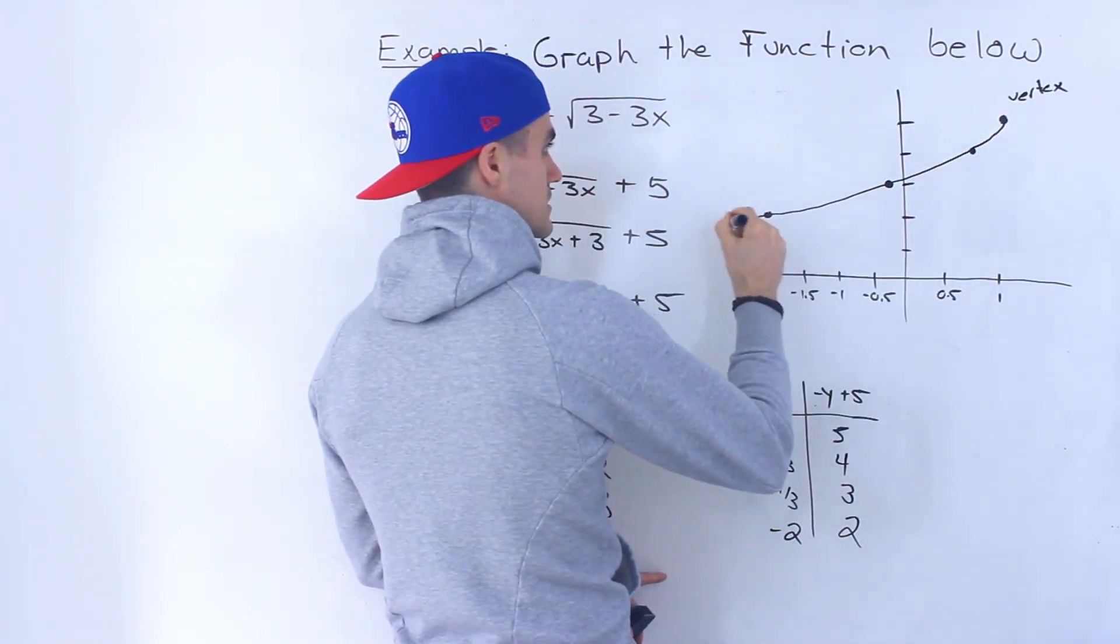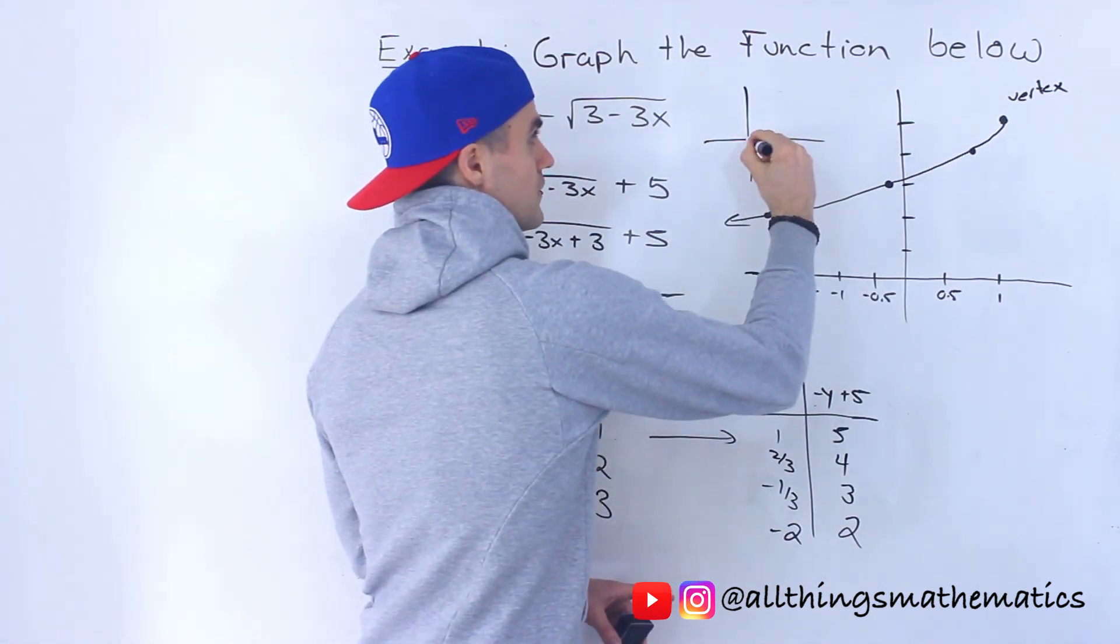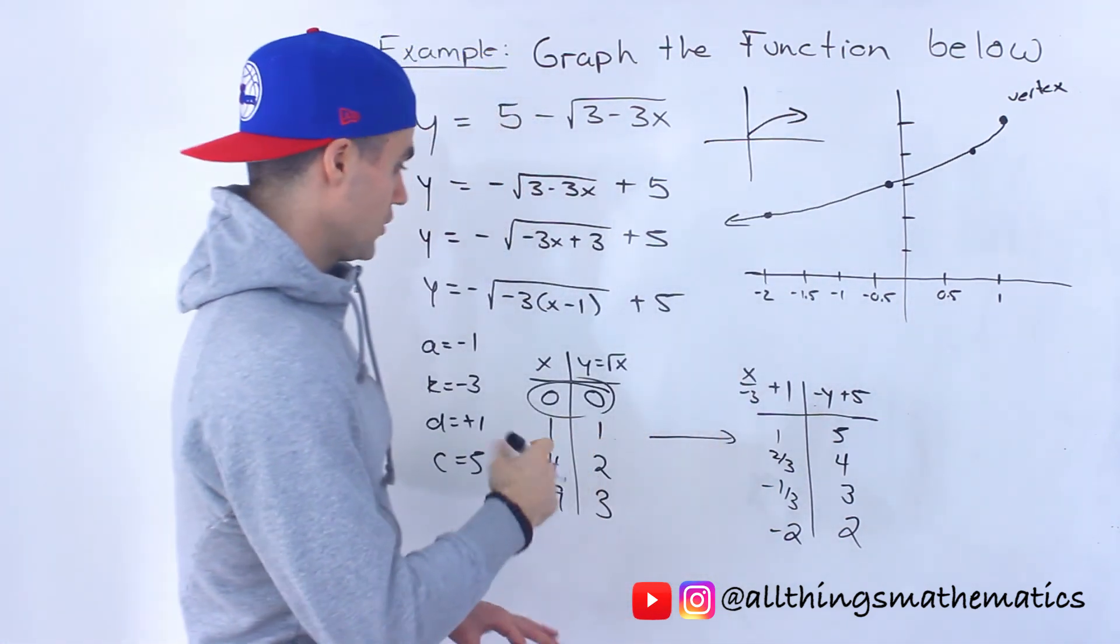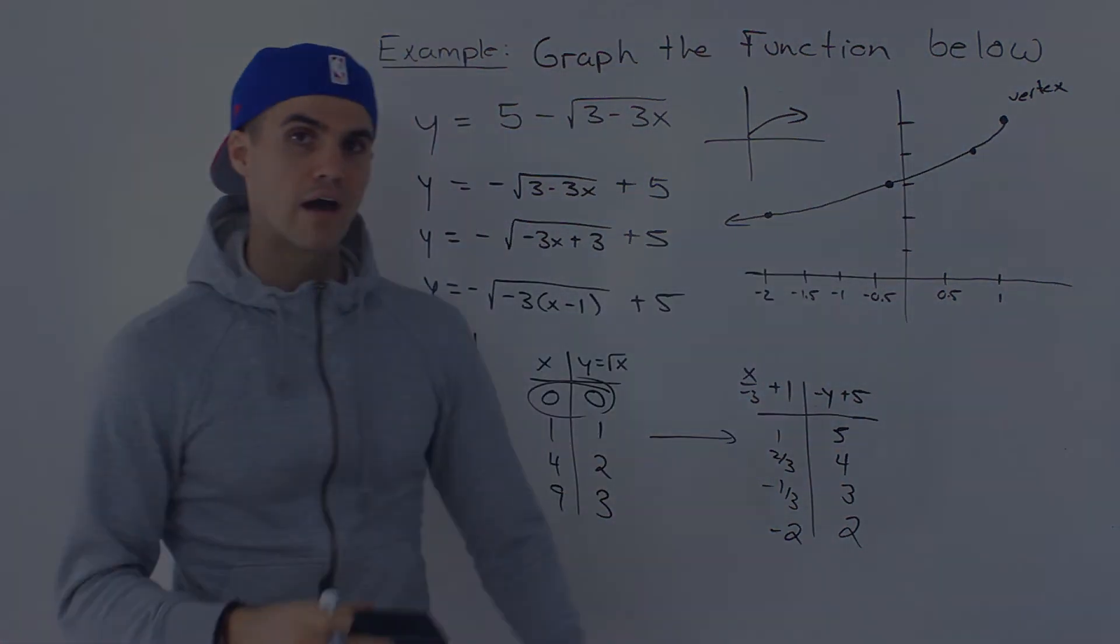So connecting these, it basically looks like that. So we took that square root function like this, put it through these transformations, we ended up with that final graph.